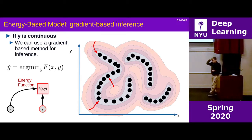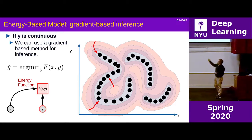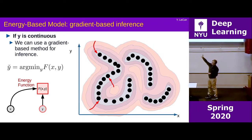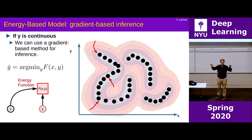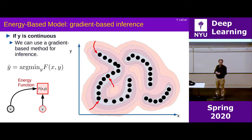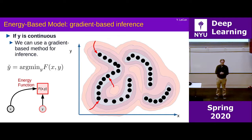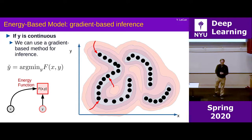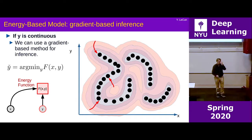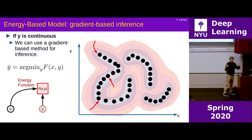As an aside, a graphical model is basically an energy-based model where the energy function decomposes as a sum of energy terms, each taking into account a subset of the variables. There would be a collection of F's — some taking a subset of Y, some a subset of X and Y, etc. If organized in a particular form, there are efficient inference algorithms to find the minimum of the sum of those terms. This is what belief propagation and similar algorithms do in graphical models.